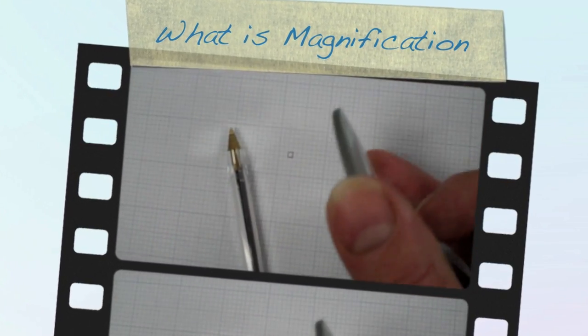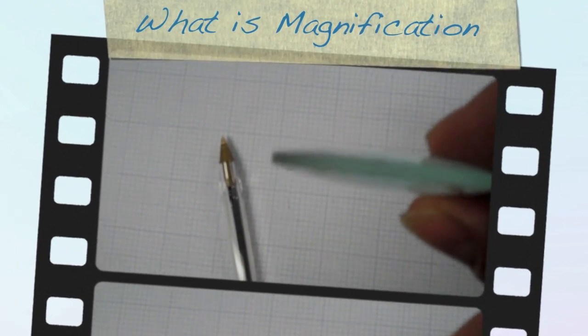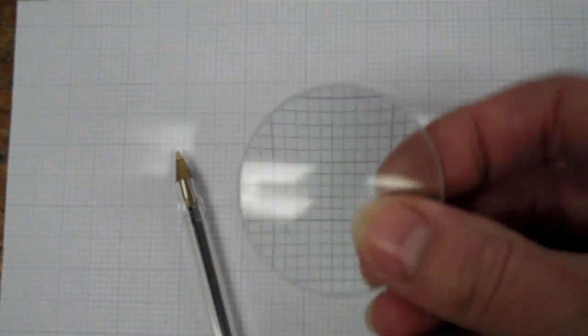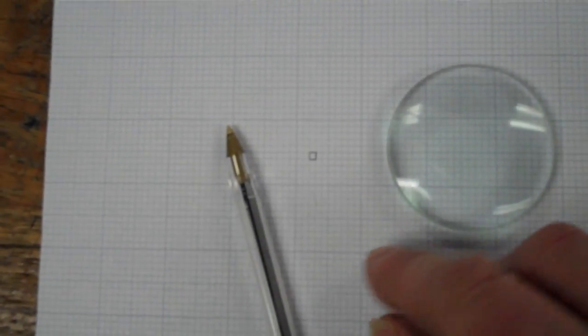In this experiment we're going to have a look at the magnification of a convex lens. A convex lens, if you remember, is a lens which is fatter in the middle than it is at the edges. That's one here, and I'm just going to show you what I mean by magnification.